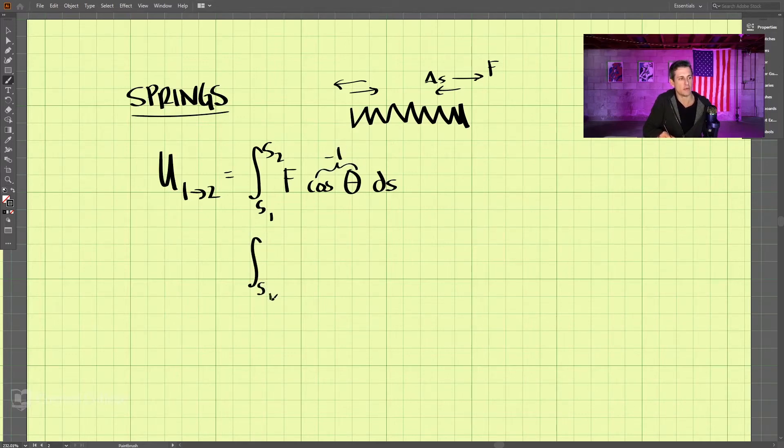So let's simplify that. We have s1 to s2, negative f ds. So that becomes the work term.